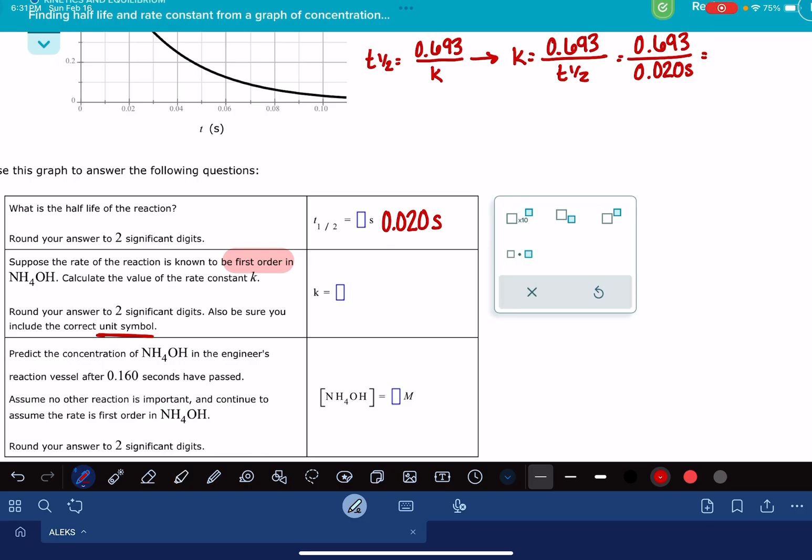I'm going to do the math really quick on that. My rate constant is 34.65 seconds to the minus one. To two significant figures, that's going to be 35 second to the negative one.